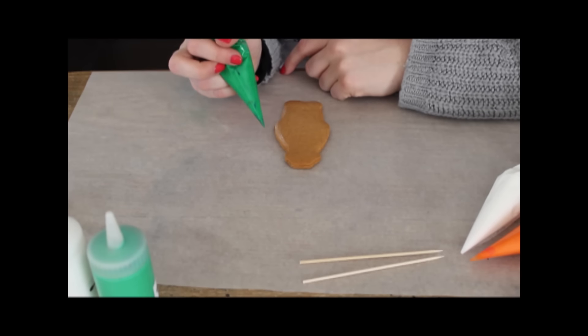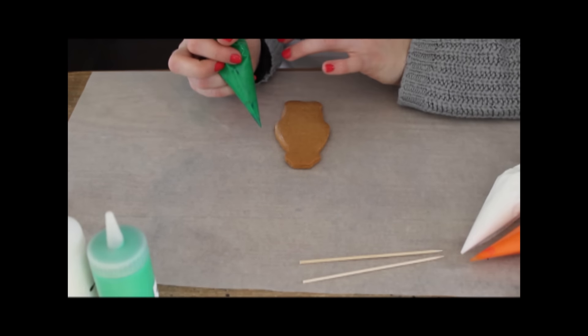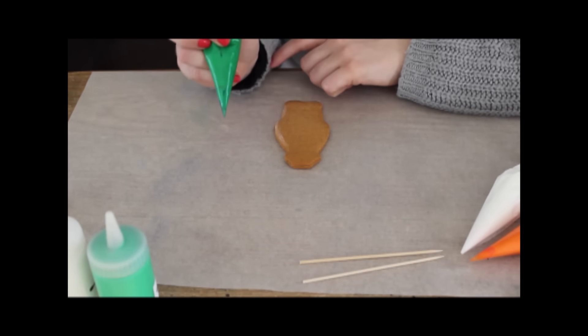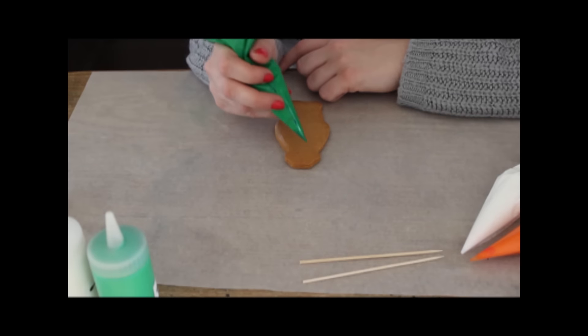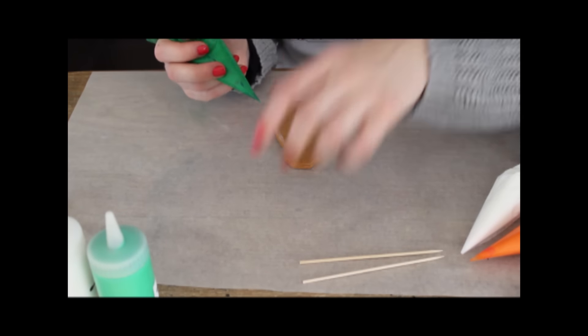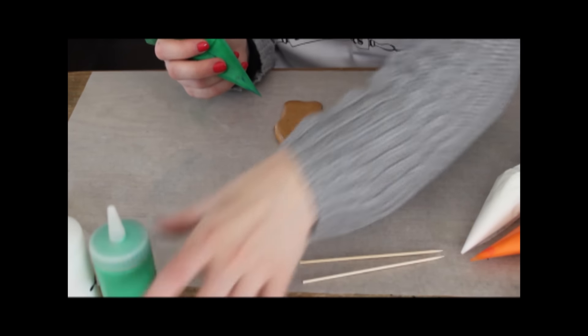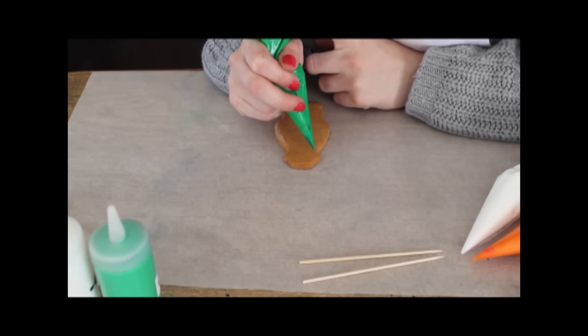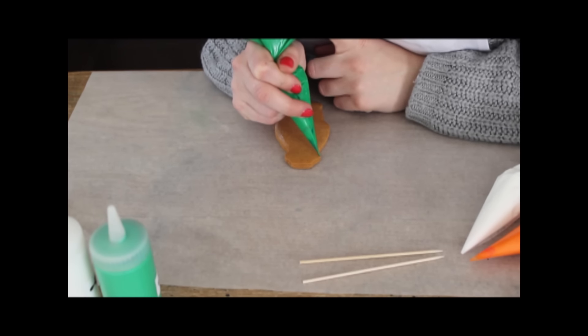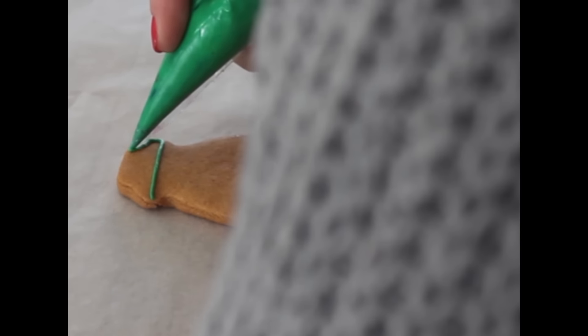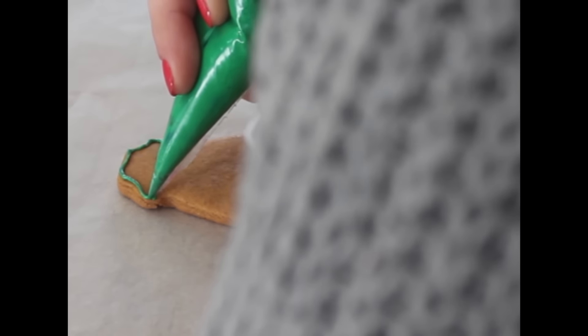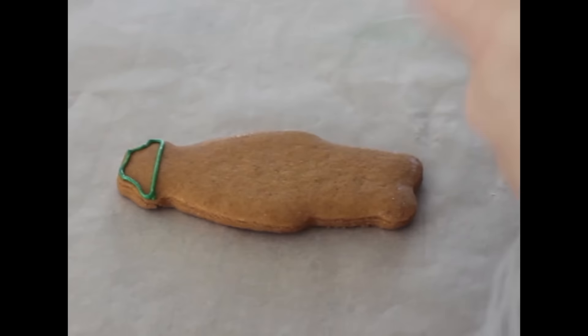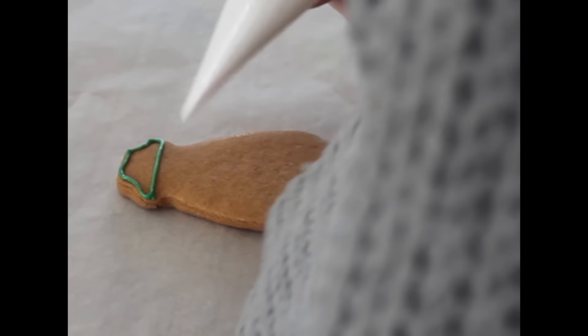You need to start by doing all of your outline first and we're using our line icing. It forms the walls so that when you pop your flood icing in later it doesn't all pour out. We're going to start off by doing the Snowman's hat, so we just start here and give him a nice hat.